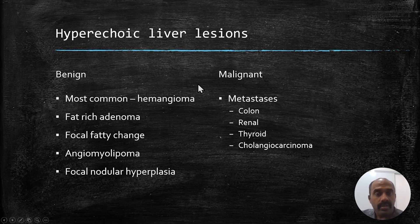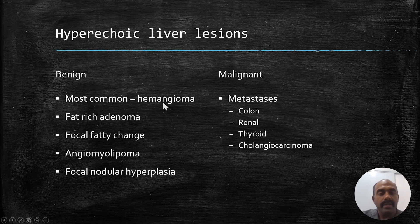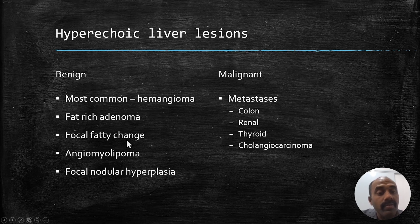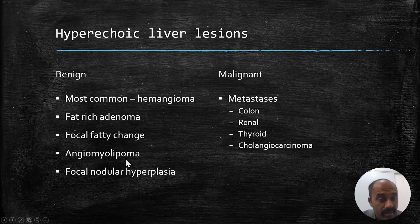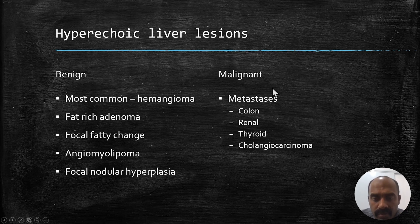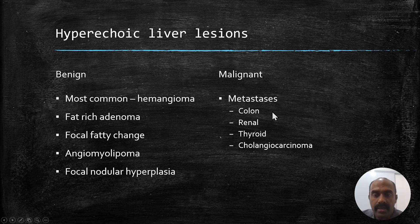What are the differentials for hyperechoic liver lesions? The most common lesion is the benign hemangioma. You can also have a fat-rich adenoma. Focal fatty change in a normal liver can appear as a well-defined hyperechoic area. Angiomyolipoma and focal nodular hyperplasia are other differentials. Whenever you are looking at a slightly older patient or in cases of a known malignancy, always consider metastasis — one of the frequent hyperechoic metastatic foci is from the colon.